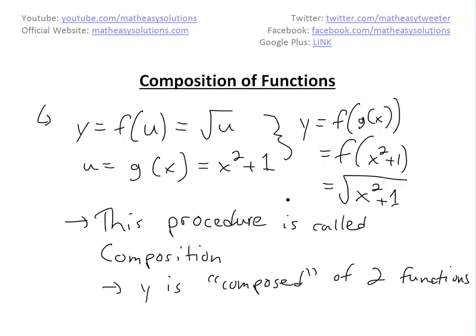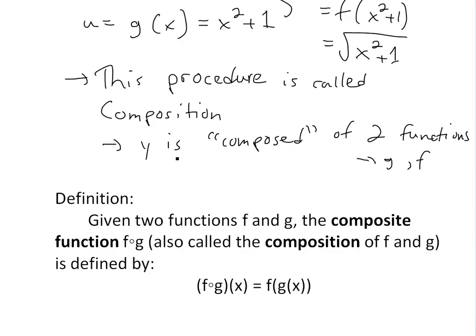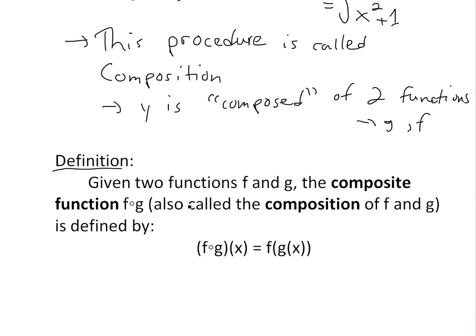This procedure is called composition, and y is composed of two functions, namely g and f. The general definition of the composite function: if you're given two functions f and g, the composite function f circle g, also called the composition of f and g, is defined as f∘g of x equals f of g of x.